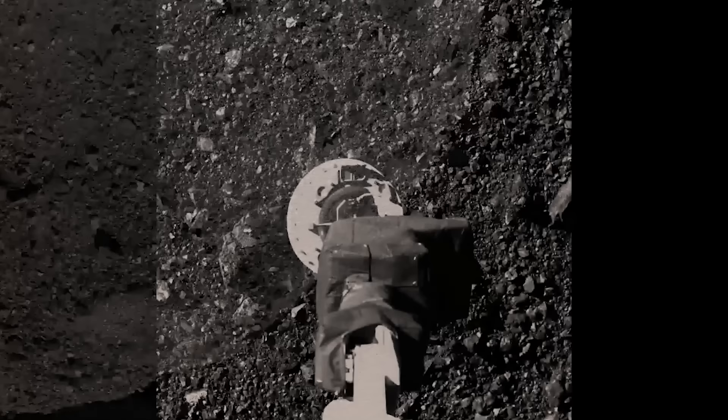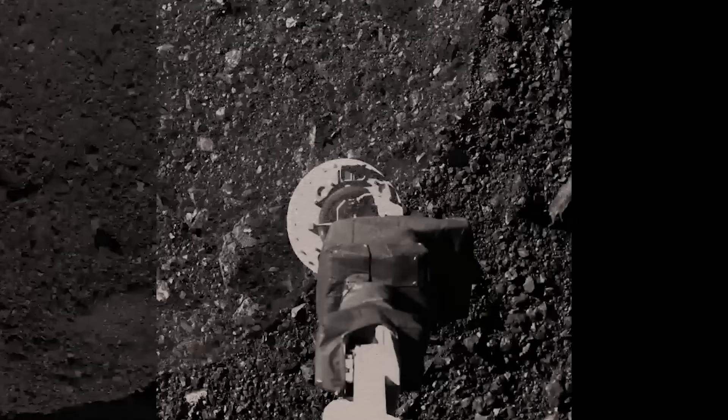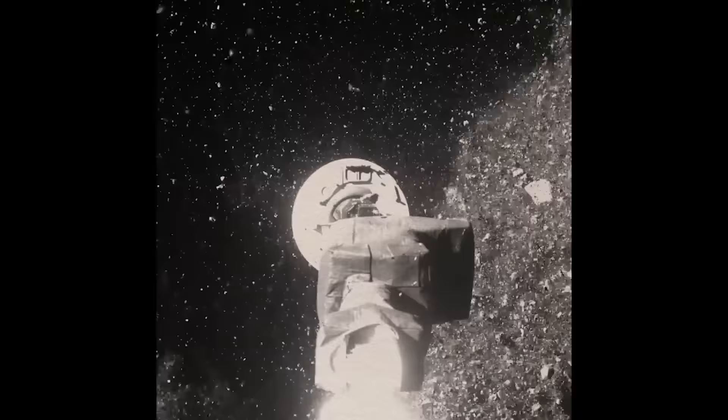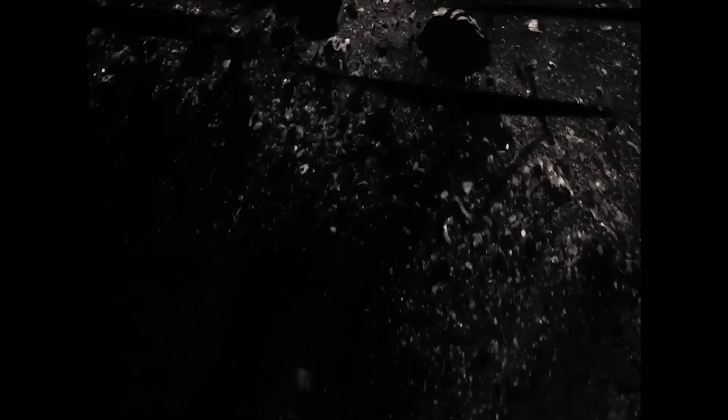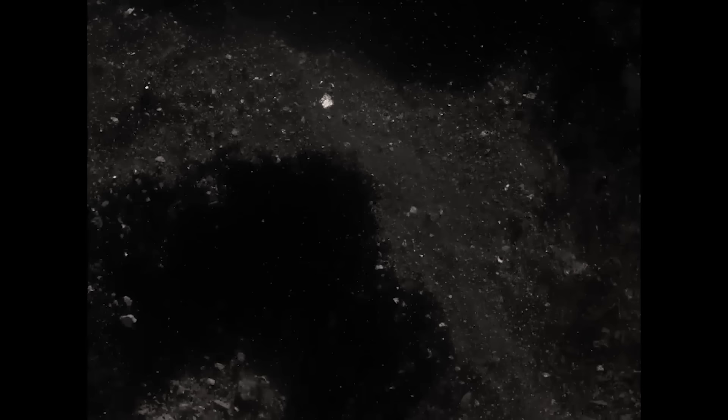But as OSIRIS-REx backed away from the asteroid on its way back, they realized that they had a big problem. In their excitement, they had grabbed so much that a mylar flap that was supposed to seal up the collection device had gotten jammed open by a rock that appeared to be about an inch across. This created a gap that allowed pebbles and dust to escape. Images from an onboard camera showed them floating away.